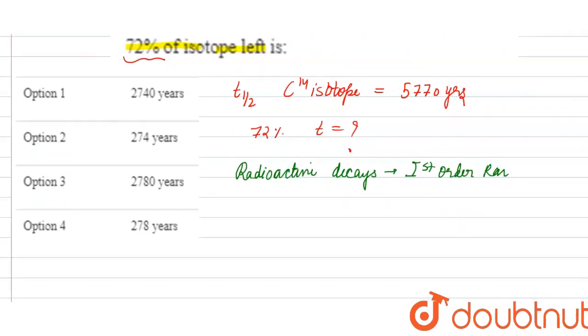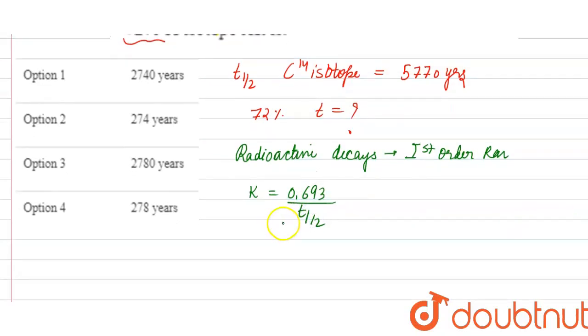For first order reaction, we have a relation between rate constant and T half. What is the rate constant? Rate constant is equal to 0.693 upon T half. So what do we need to find? We need to find the rate constant because I have T half given. So this is 0.693 upon T half, which is 5770 years. Let's keep it here.